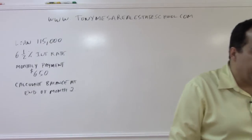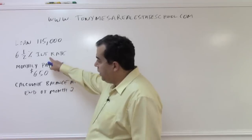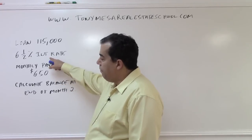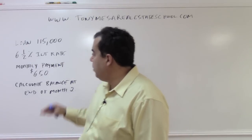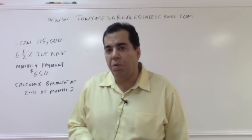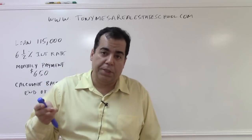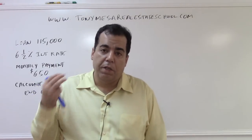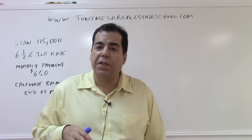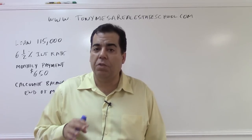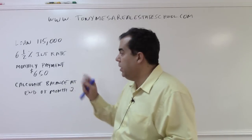Conceptually, with a fixed rate loan — the interest rate here is six and a half percent — this is not an adjustable mortgage. With a fixed rate loan, the monthly payment is always going to be the same: month one you pay $650, month two $650, month three $650 — the same amount each and every month.